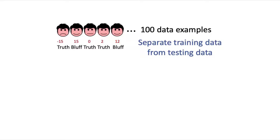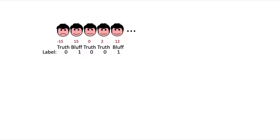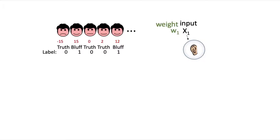You feed your training data into your perceptron model. The model requires inputs that are numerical values, so we represent bluffing with a 1 and truth-telling with a 0. The perceptron waits for inputs — in this case, one-dimensional data consisting of the angle of Sam's mouth. The perceptron needs to find a unique weight for each dimension of the inputs, and since we only have one-dimensional input, the perceptron only needs to find a single weight value.